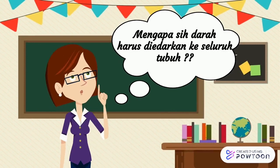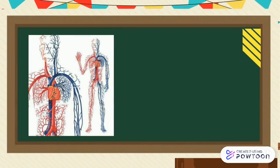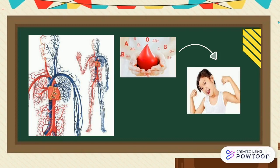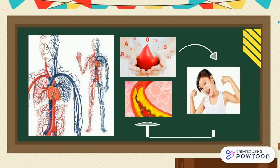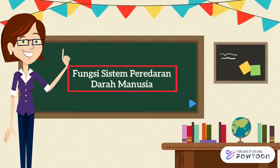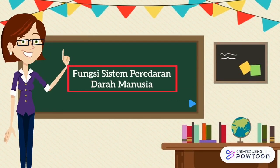Kenapa sih darah harus diedarkan ke seluruh tubuh? Karena pada sistem peredaran darah, darah merupakan suatu cairan yang sangat penting bagi tubuh kita. Salah satu fungsi darah ini ialah sebagai pengangkut atau menyeluruhkan berbagai zat-zat penting dalam tubuh ke seluruh bagian tubuh yang lain. Bukan hanya itu loh anak-anak, masih banyak lagi fungsi dari sistem peredaran darah manusia.